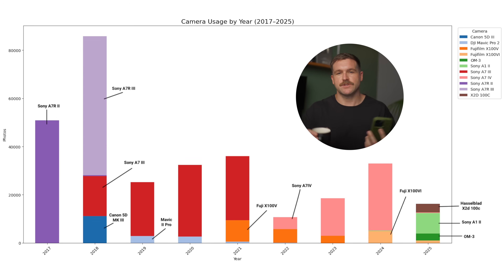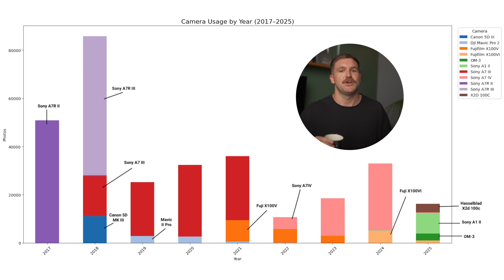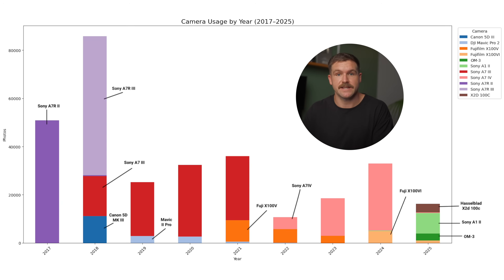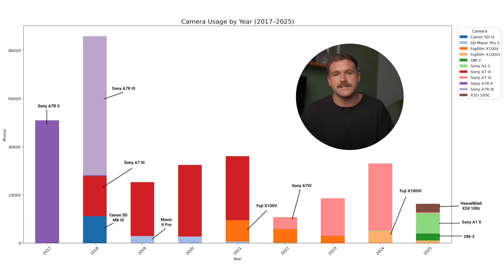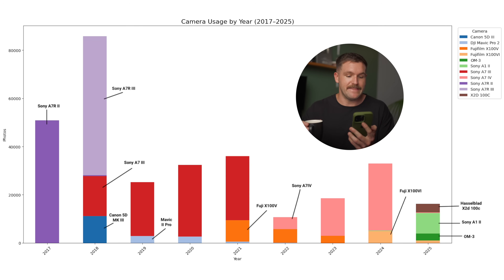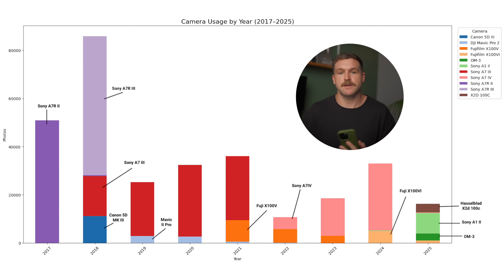Back in 2017 I was shooting with the a7R II quite a bit — that was my first real full-frame camera, picked up in 2016. Unfortunately the 2016 data isn't in this dataset because it's in other catalogs; I didn't start using one catalog until 2017. In 2018 I picked up the a7R III — a great upgrade, but I didn't like the color, so I eventually traded it. I also picked up a Canon 5D Mark III because I was obsessed with Canon's color science, which was the best back in the day.